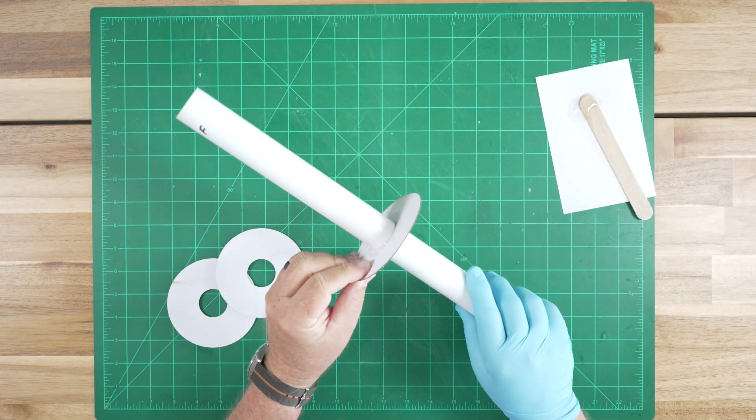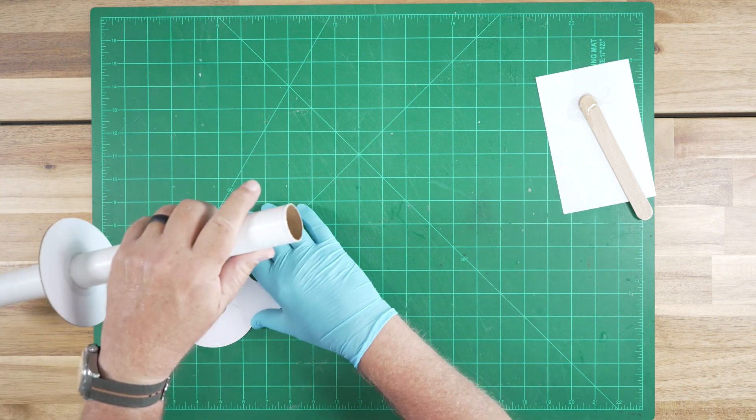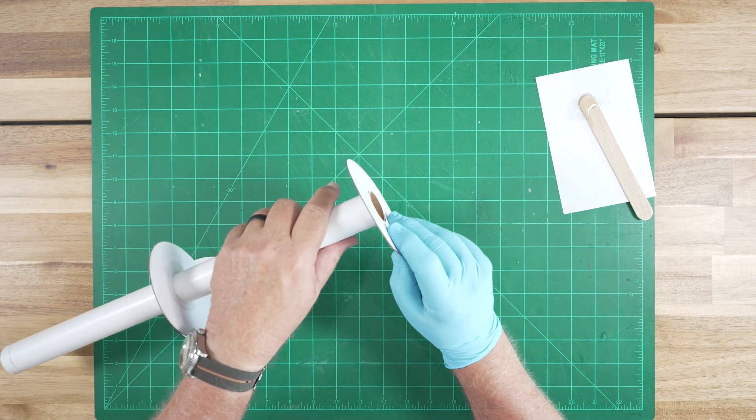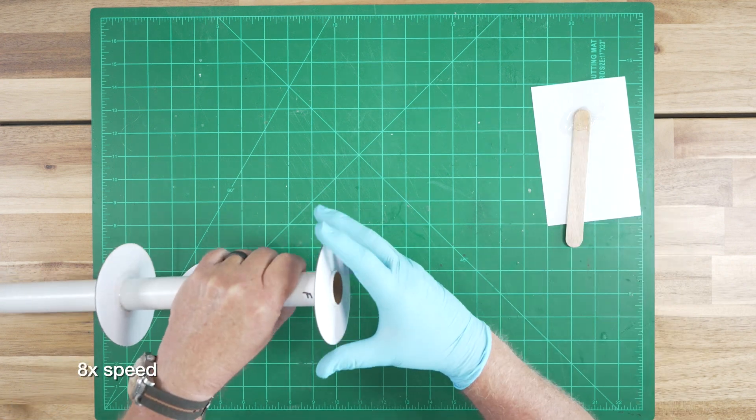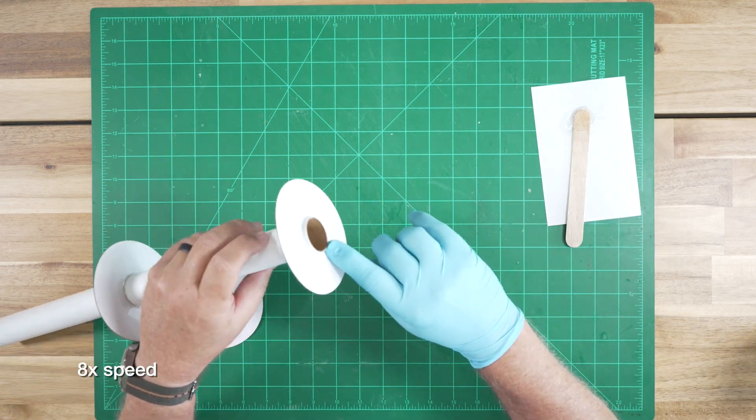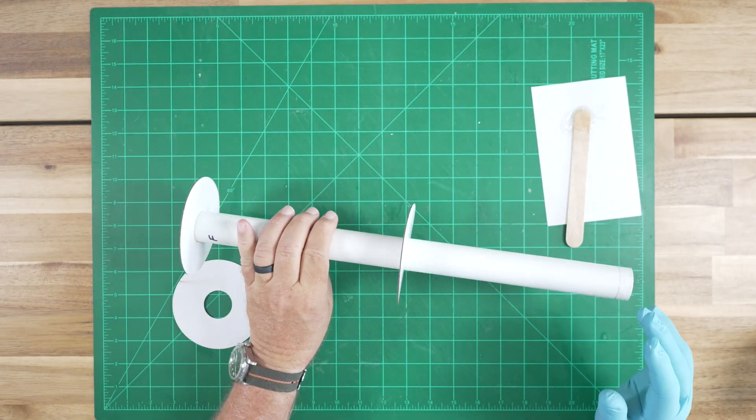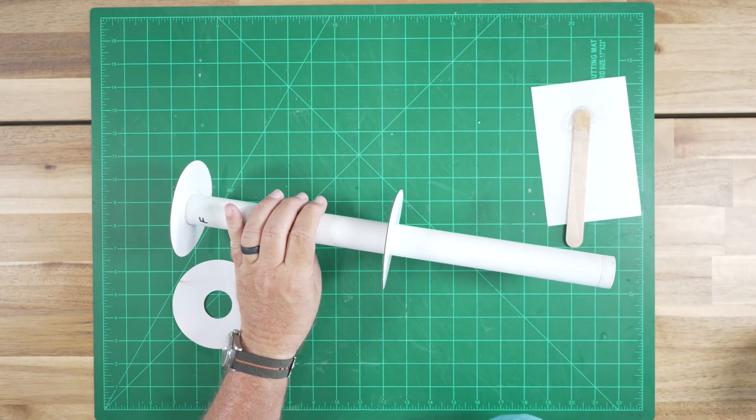The epoxy on our center ring has cured so we can now install the forward ring. We'll let this cure and then install the aft ring.